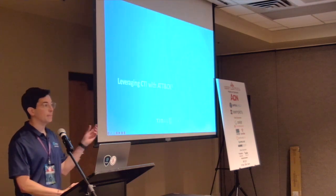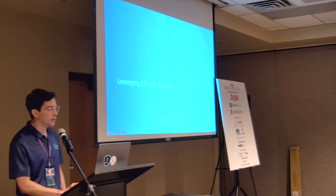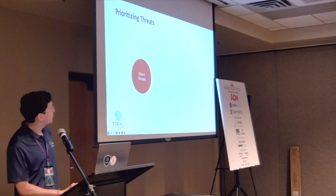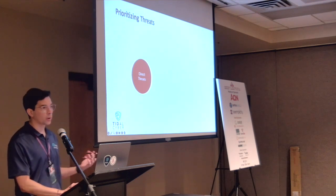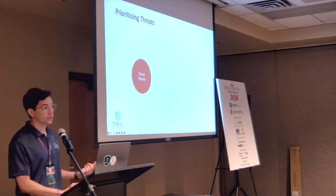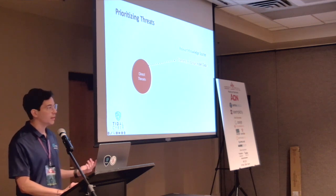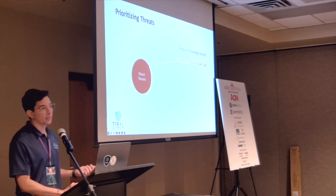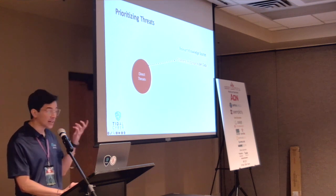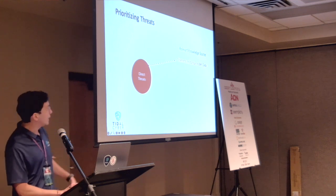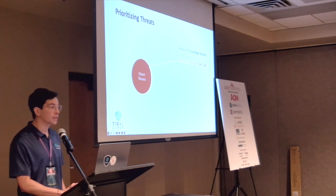Let's jump into using CTI inside ATT&CK. When prioritizing threats through threat profiling: direct threats are the ones only you know about. You're going to see telemetry in your environment that gives you insights into who the adversary might be. Look at historical data — who has been targeting you? You might see things like domain information that help you map out where adversaries are coming from.